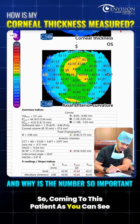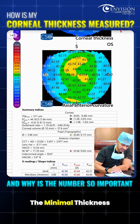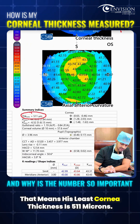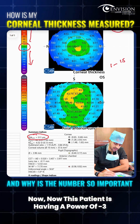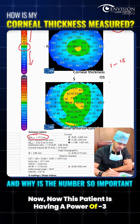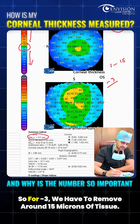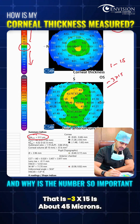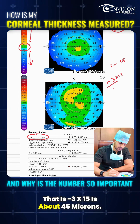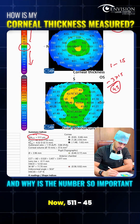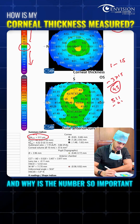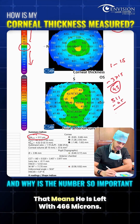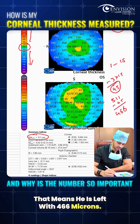For this patient, the minimal corneal thickness is 511 microns. This patient has a power of minus 3, so we need to remove around 15 microns per diopter — that's minus 3 multiplied by 15, which equals about 45 microns. So 511 minus 45 leaves him with 466 microns of residual tissue.